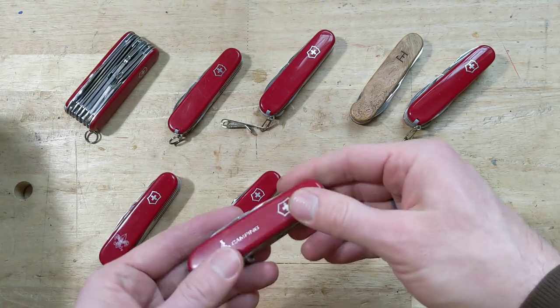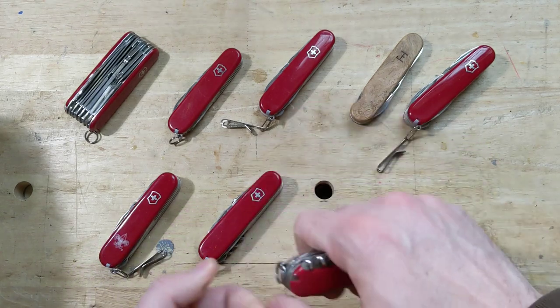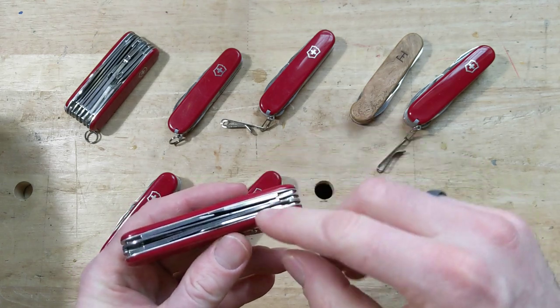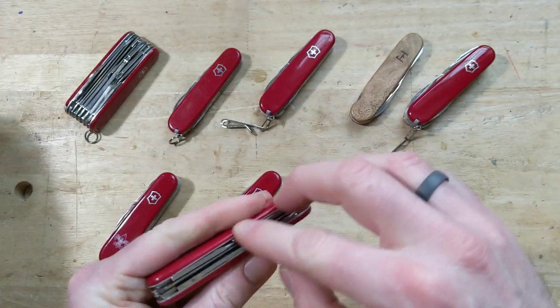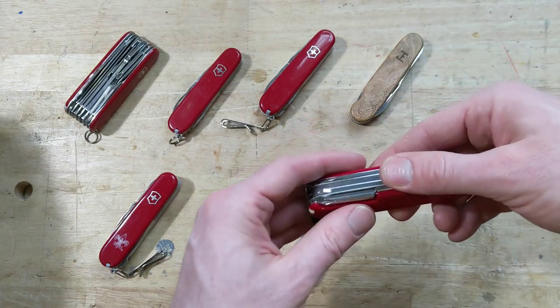So I don't recommend any of the models that have a corkscrew. Like this is a Campx, which is a great combination of tools, but that corkscrew is just not handy to hold in your hand. But it does come with, you know, the blades and it has a saw and the openers.